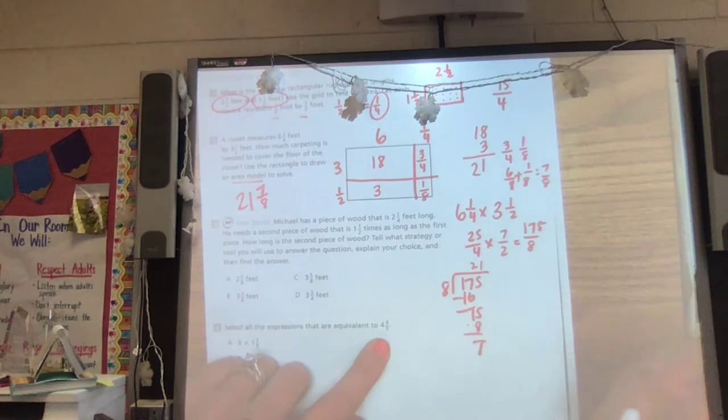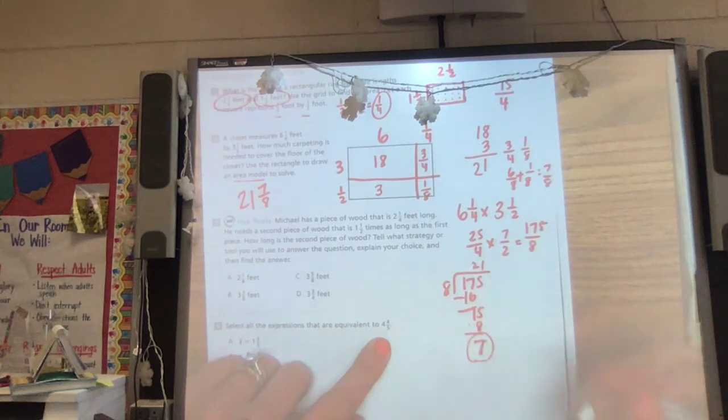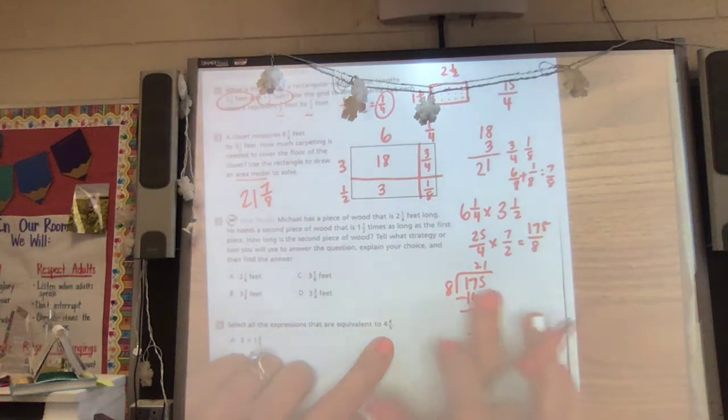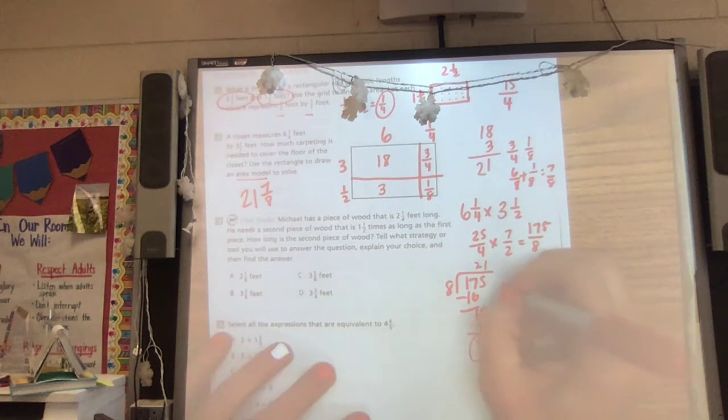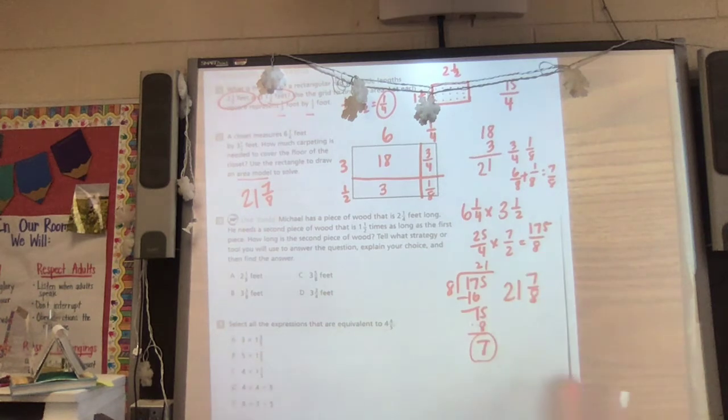Either one you're going to have to do some work to do this. So I still had 21 with seven left over and I know I'm in eighths. So that could also give you your answer.